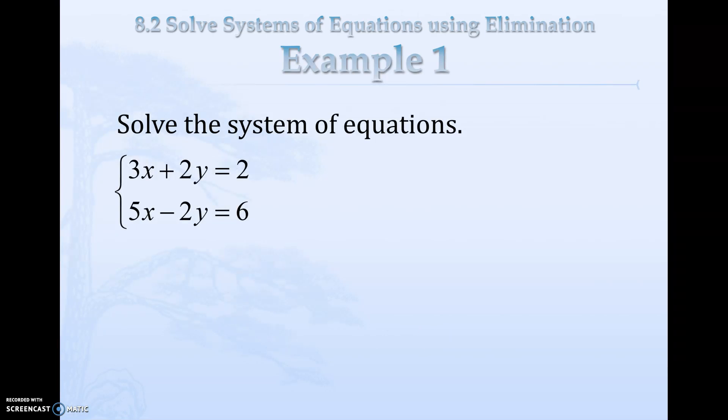Solve the system of equations using elimination. With elimination, we are going to add the two equations together and try to get one of the variables to completely go away. You're looking for something like positive 2y and negative 2y, that's perfectly set up for elimination. So I'm going to add these two equations together.